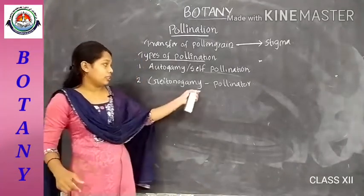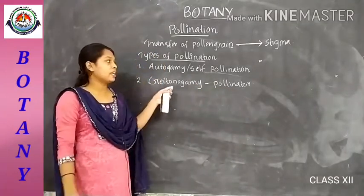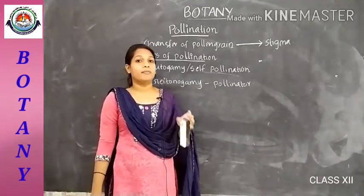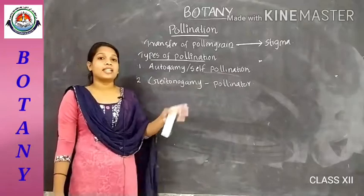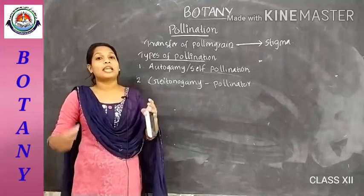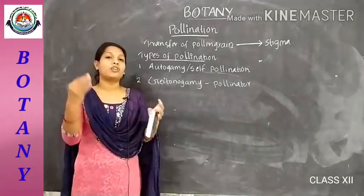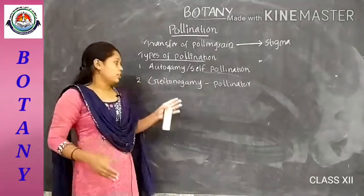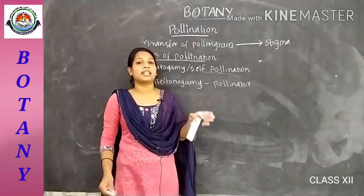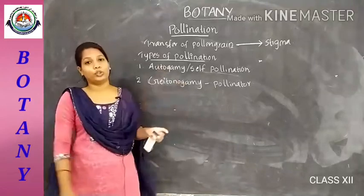Geitonogamy requires a pollinator, but it is genetically similar to autogamy. This is because the pollen grains and the ovules are both from the same plant. There is no genetic difference in the pollen grain. So geitonogamy is genetically similar to autogamy.